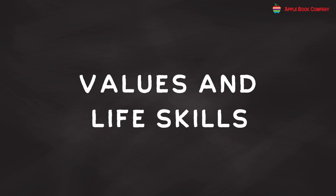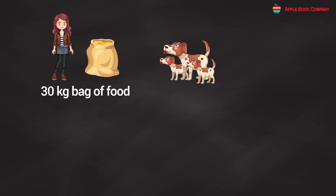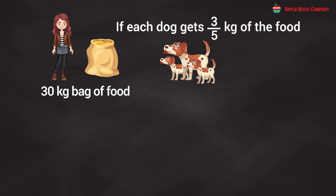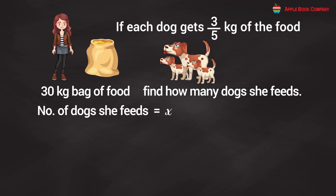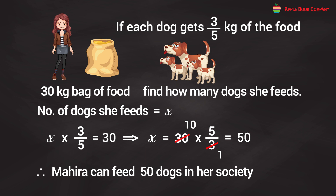Values and Life Skills. Mahira uses a 30 kg bag of food to feed stray dogs in her society. If each dog gets 3/5 kg, how many dogs can she feed? Let x = number of dogs. x × 3/5 = 30, so x = 30 × 5/3 = 50. Therefore, Mahira can feed 50 dogs in her society.